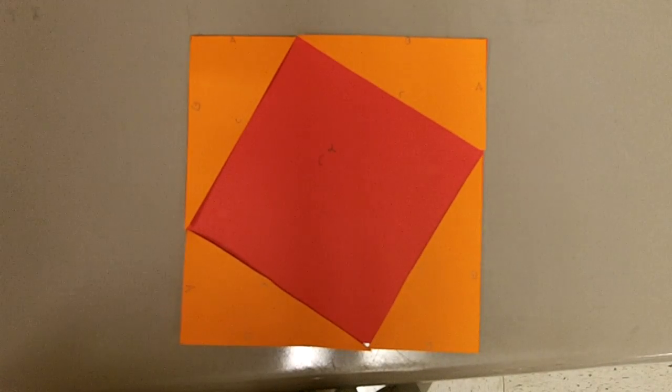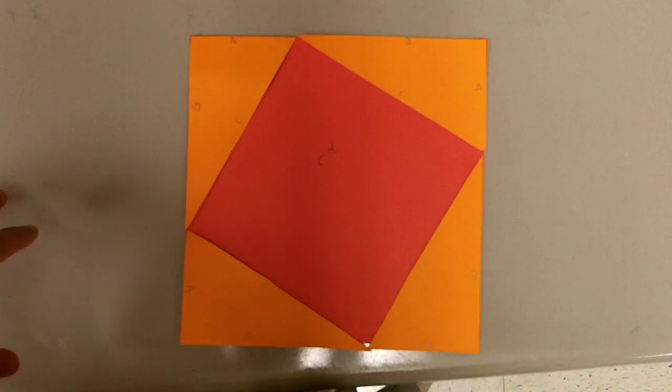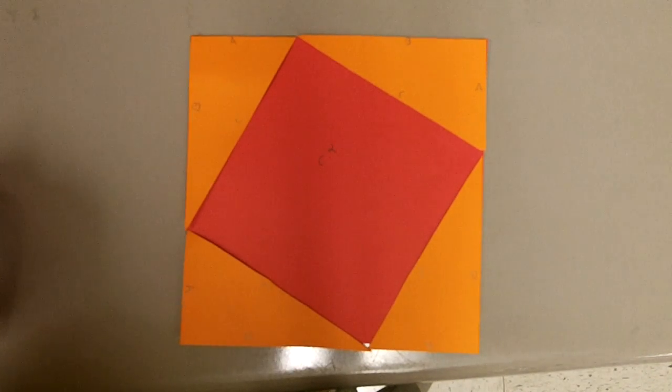I'm Austin and I'm going to prove the Pythagorean Theorem, which is A squared plus B squared equals C squared, and it only applies to right triangles.